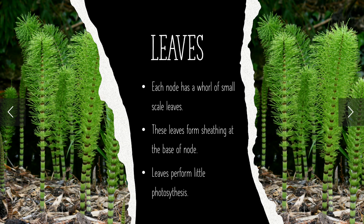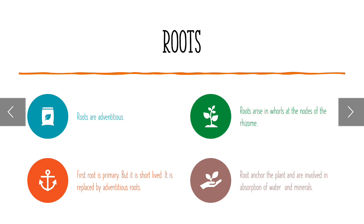Roots of Equisetum: each node has a whorl of small scale-like leaves. These leaves form a sheath at the base of the node and perform little photosynthesis. Roots are adventitious and arise in a whorl at the node. The primary root is short-lived and is replaced by adventitious roots, which anchor the plant and are involved in absorption of water and minerals.